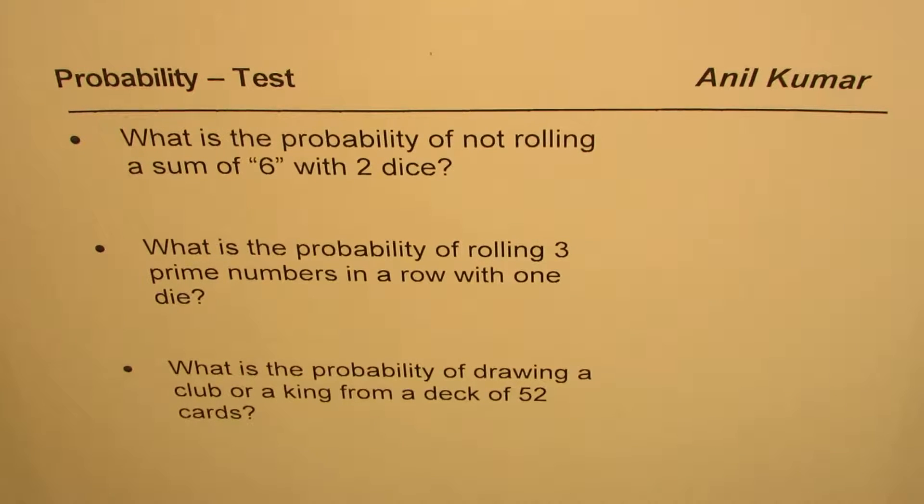The second one is: what is the probability of rolling three prime numbers in a row with one die? And the last one here is: what is the probability of drawing a club or a king from a deck of 52 cards? Let's answer these questions one by one. You can actually pause the video, answer, and then move on.